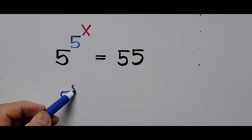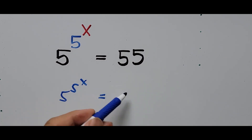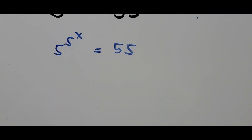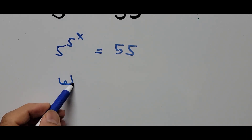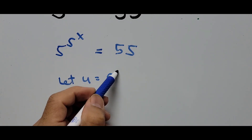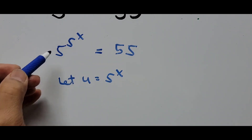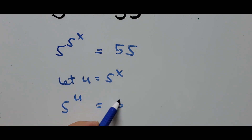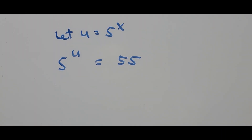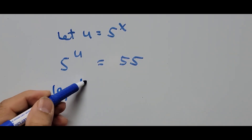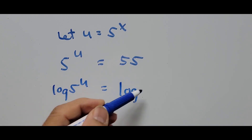So we have 5 to the power of 5^x equals 55. From here, let's do substitution — let u be 5 to the power of x, and substitute this into the equation. We now have 5 to the power of u equals 55. From here, let's apply the common logarithm: log of 5^u equals log of 55.